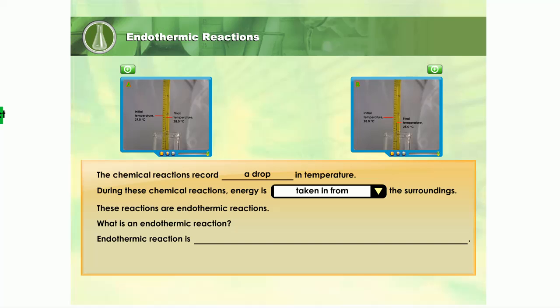So what is an endothermic reaction? An endothermic reaction is a chemical reaction which takes in energy from the surroundings.